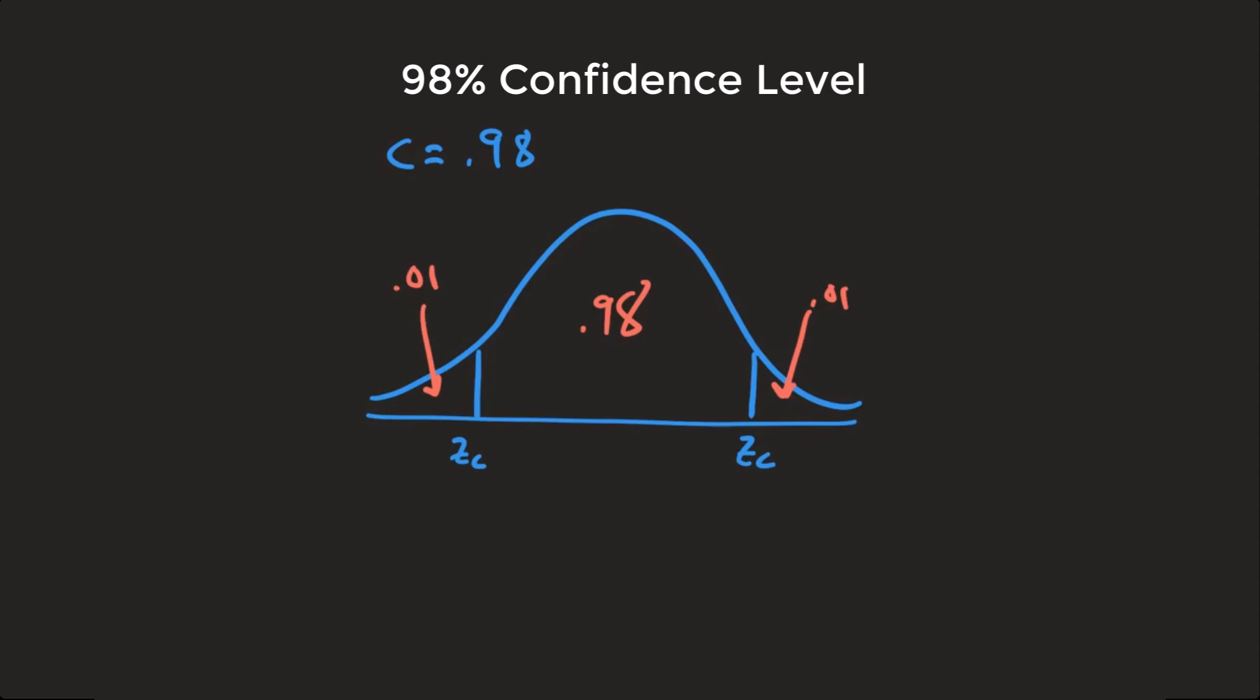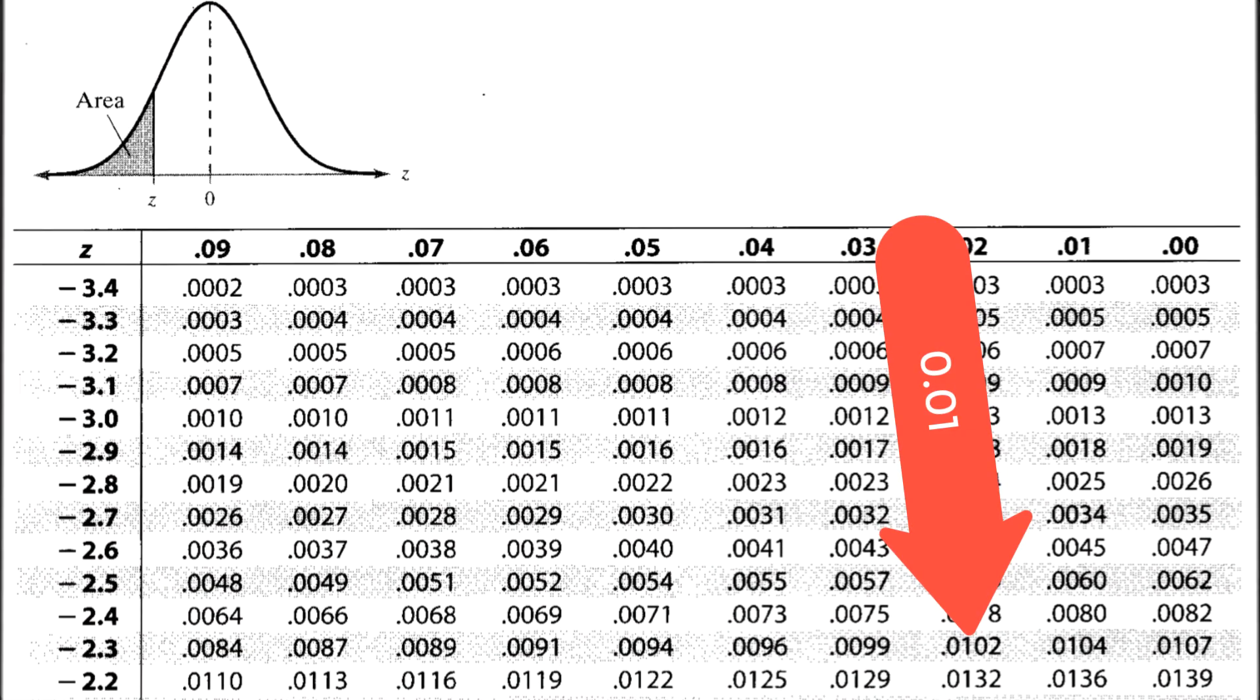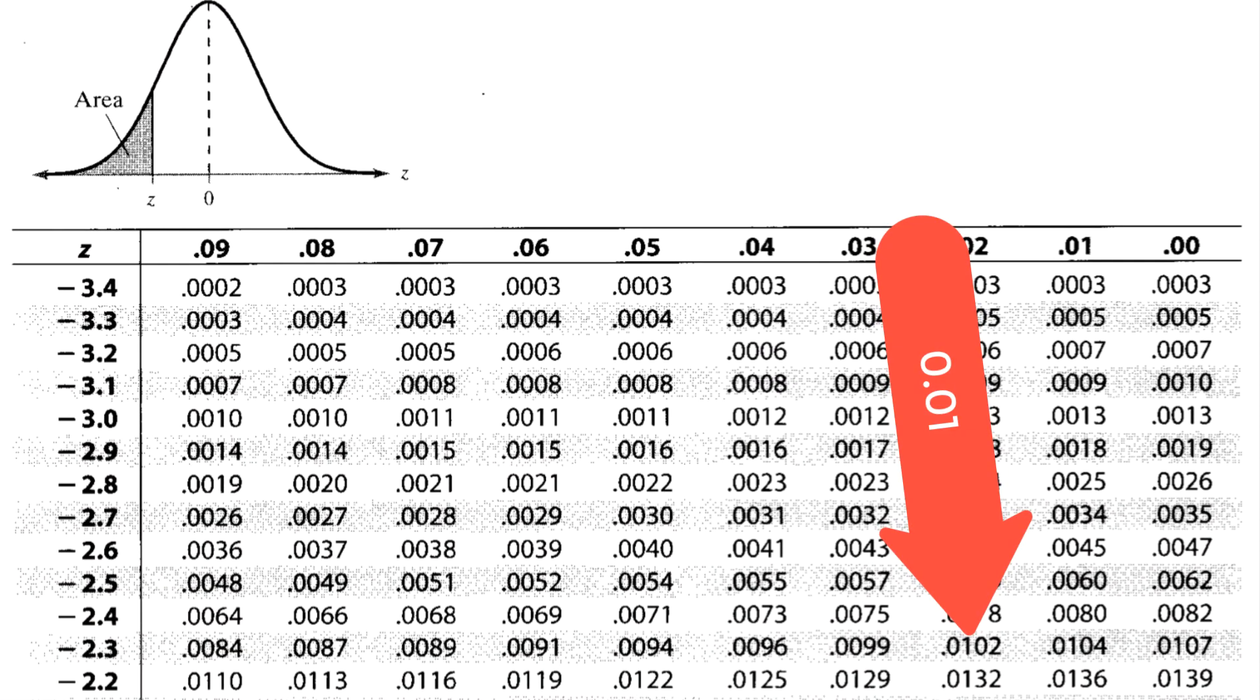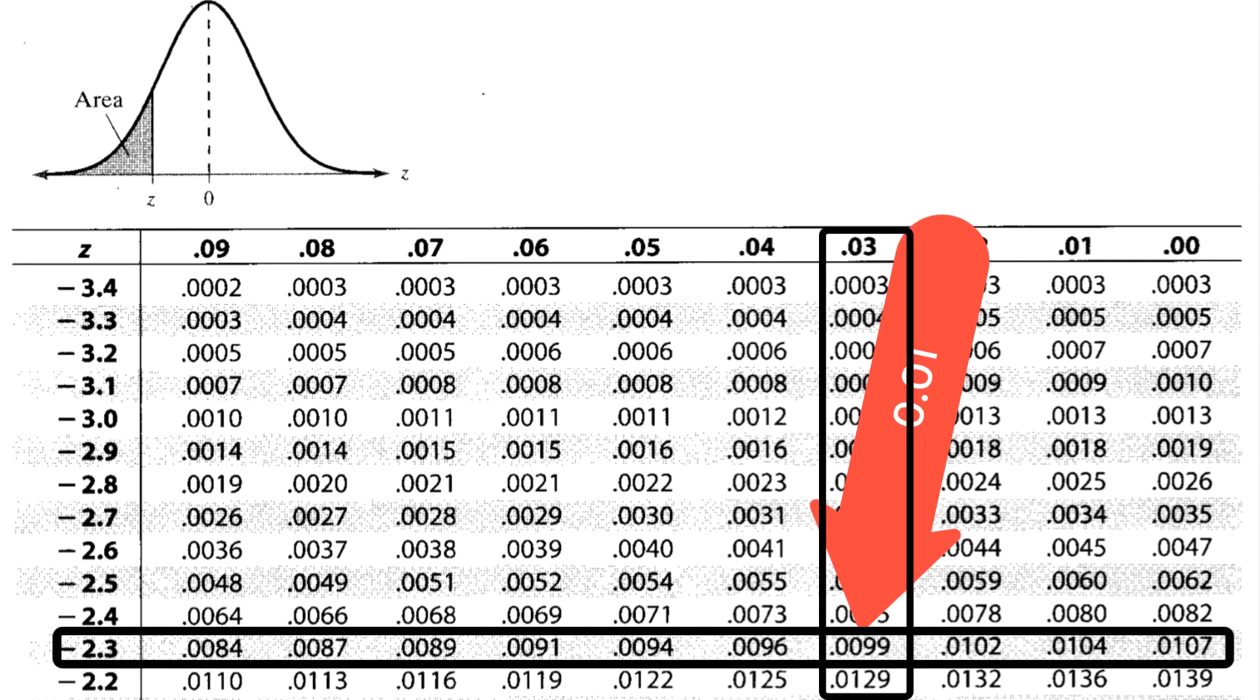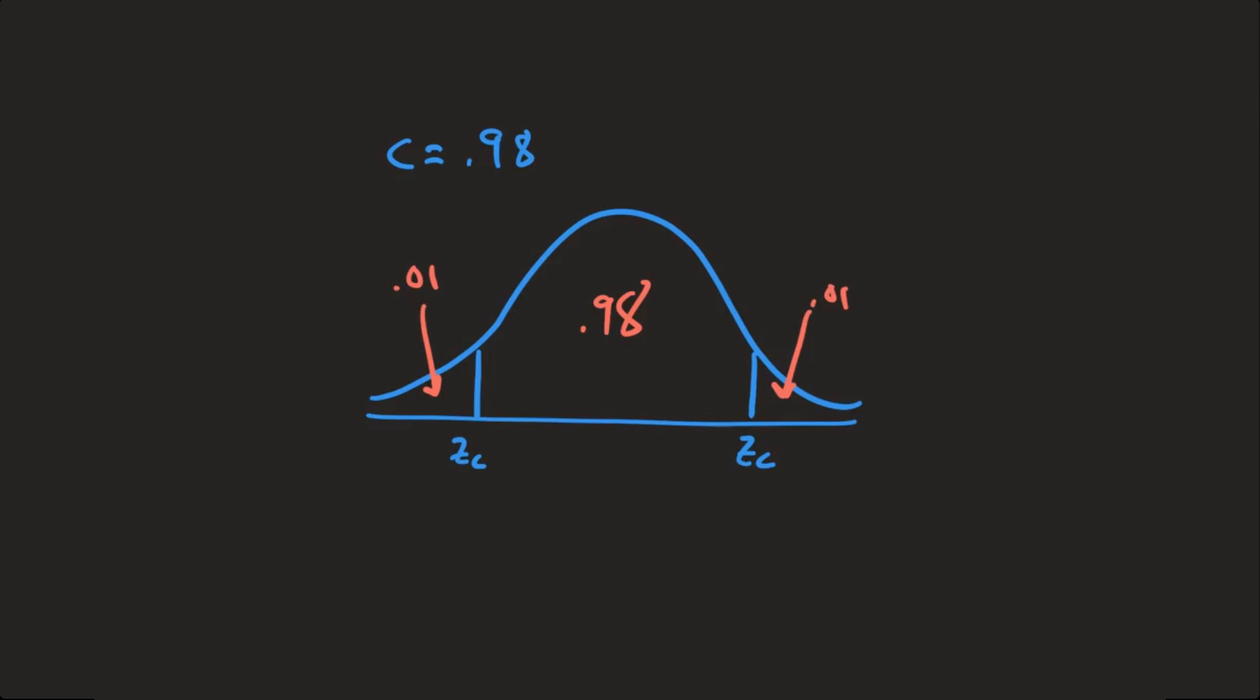Now go to your normal table, and we have to find an area of 0.01. You can actually see right here, this is very close to 0.01. This one is actually closer to 0.01 than that one. So we're going to use the z value, negative 2.33, which makes this one over here a positive 2.33.